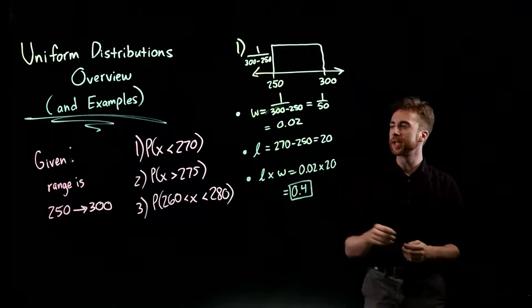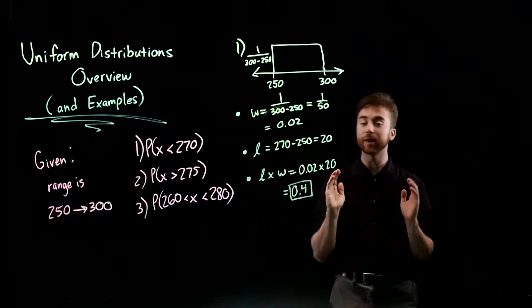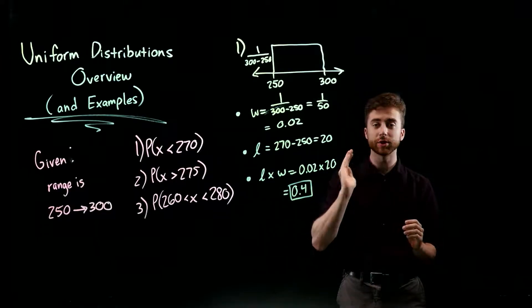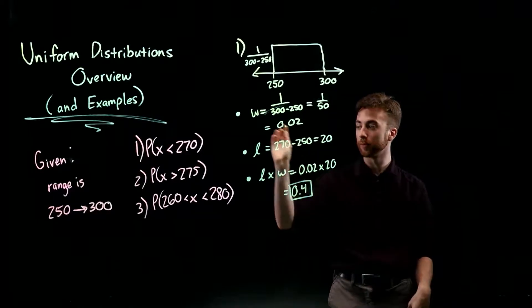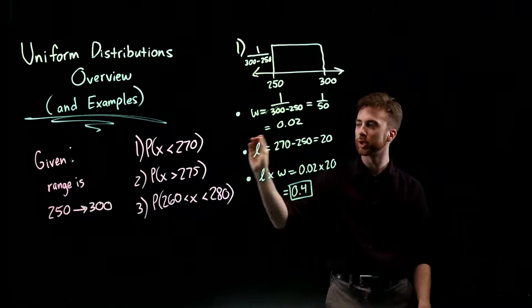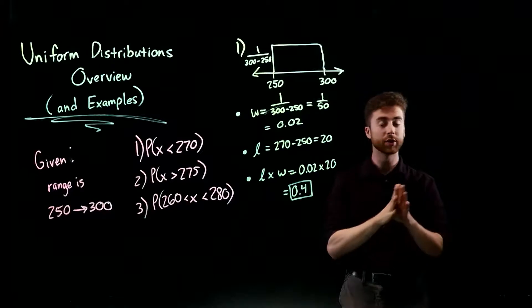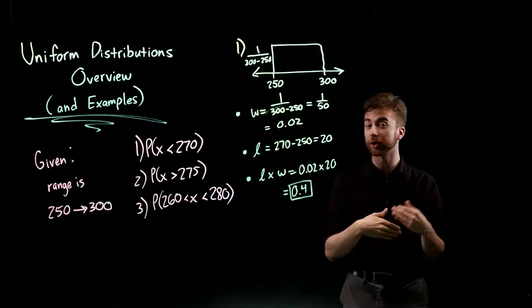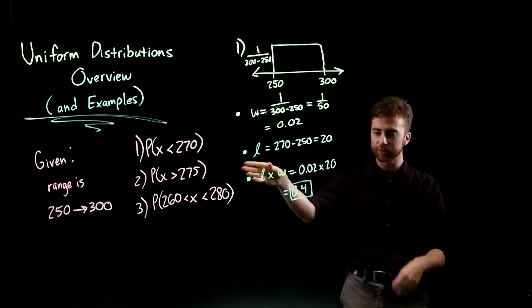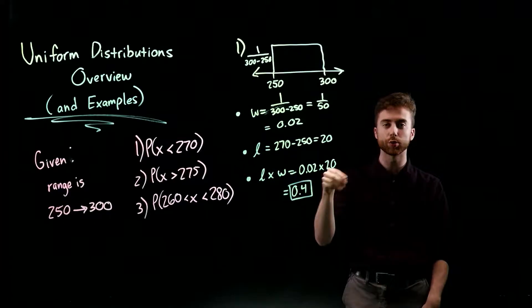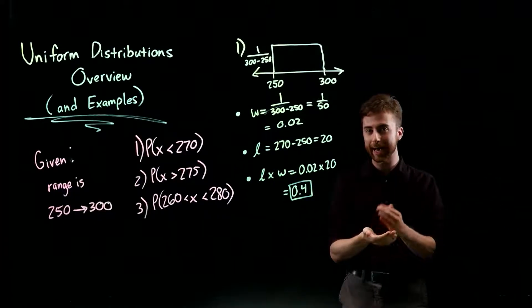For our first example, we're given a range of values starting at 250 and ending at 300. We're going to solve for three different probabilities using this method, and towards the end of the video I'll show you an alternative method that gives the exact same answers — so remember the answers as we go.